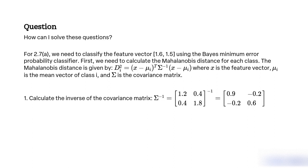Step 1: Calculate the inverse of the covariance matrix. Σ^(-1) = [[1.2, 0.4], [0.4, 1.8]]^(-1) = [[0.9, -0.2], [-0.2, 0.6]].